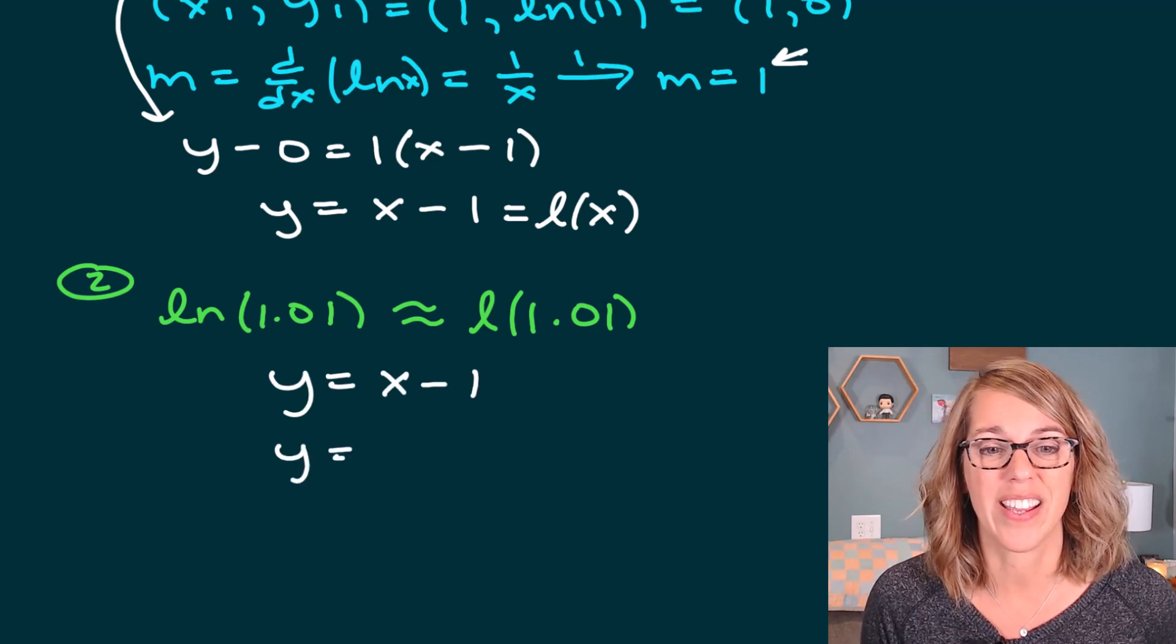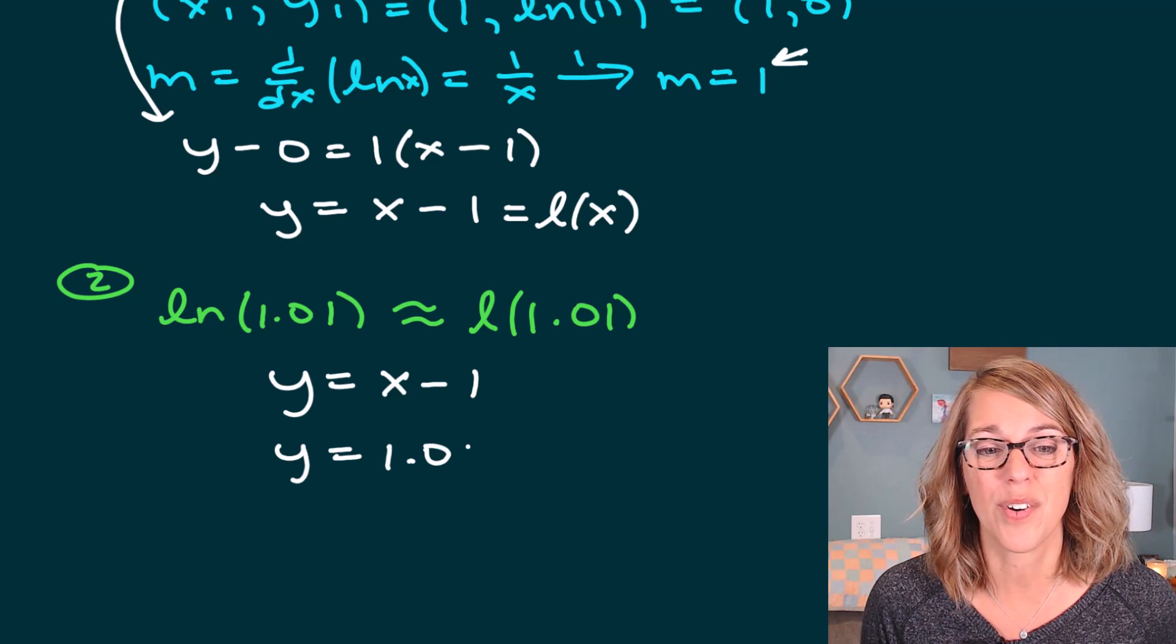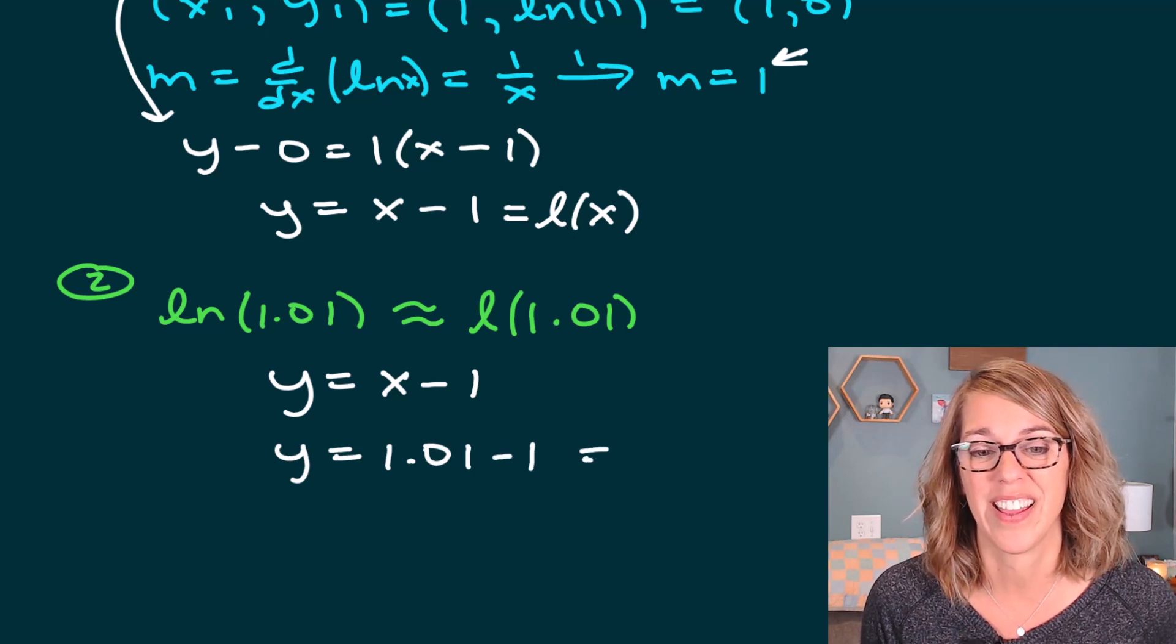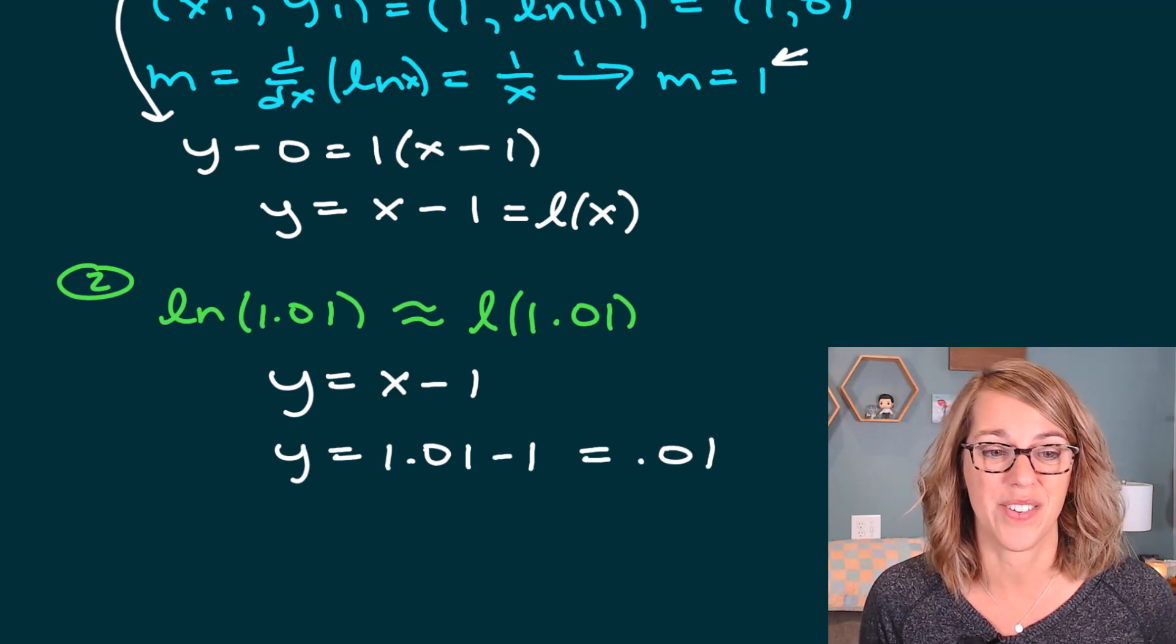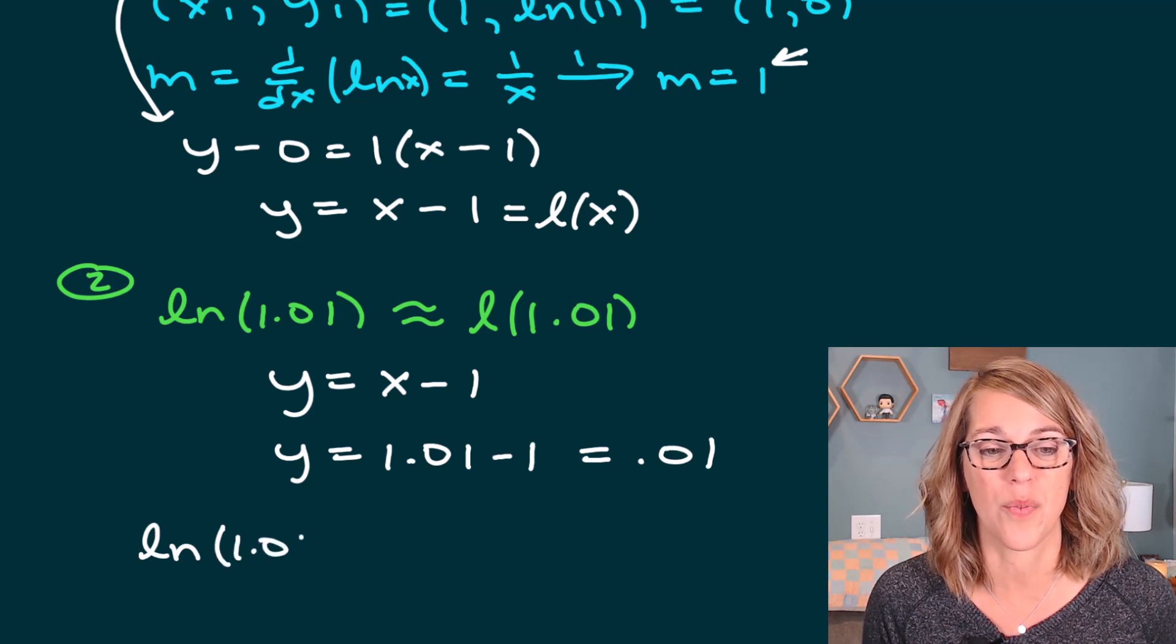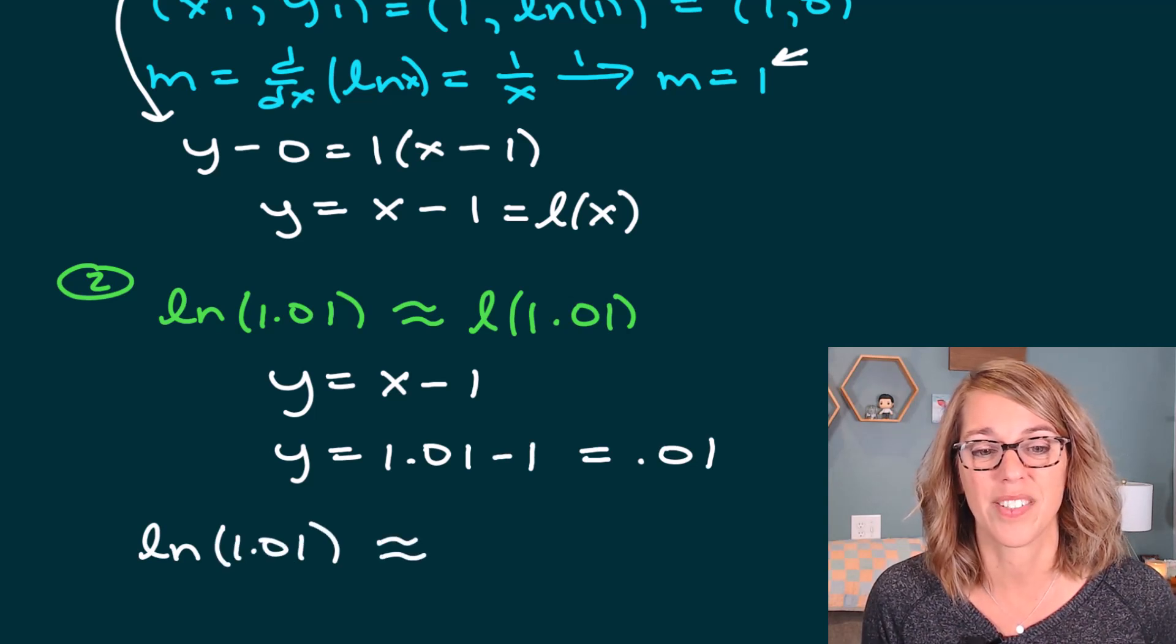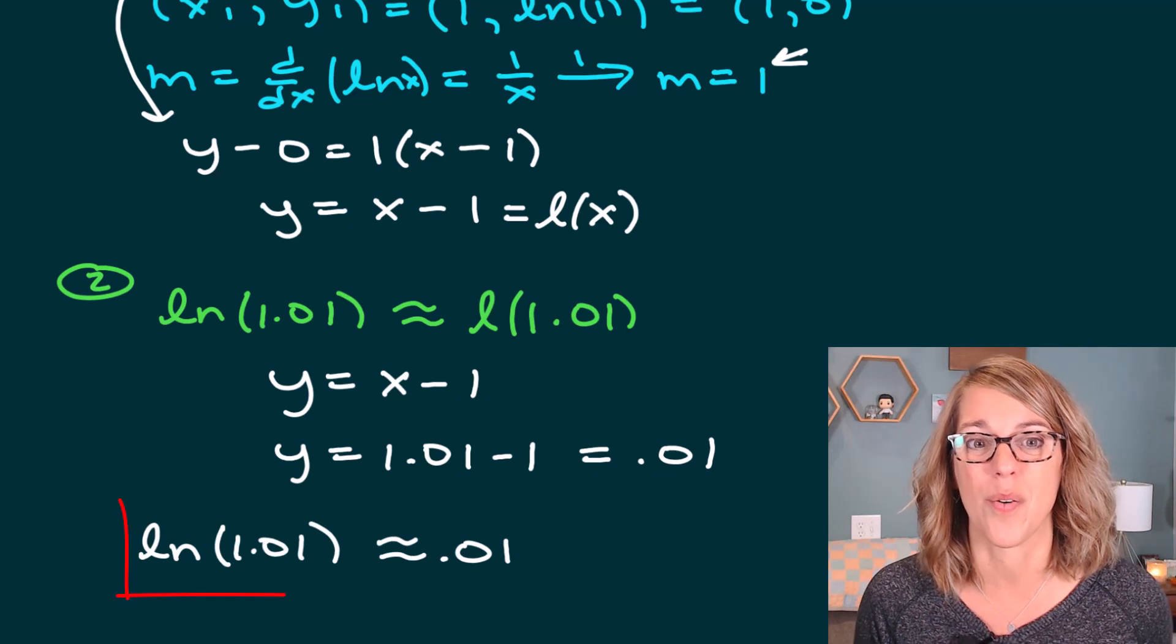So that means that y is equal to 1.01 minus 1, and our value—so the natural log of 1.01 is approximately 0.01.